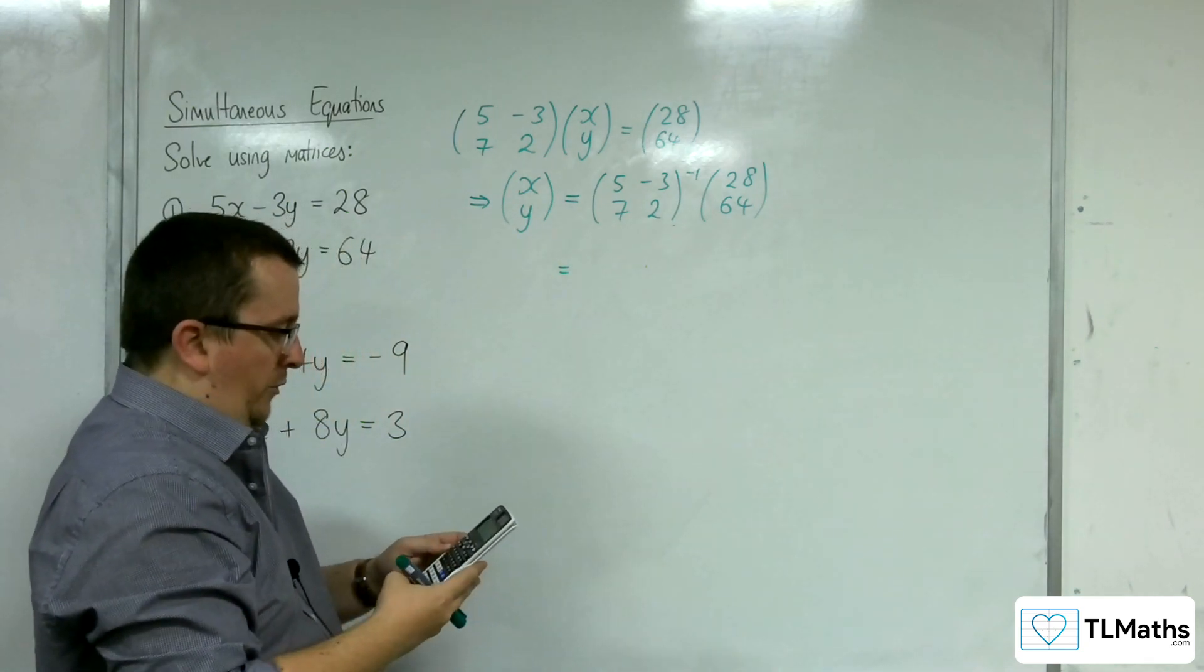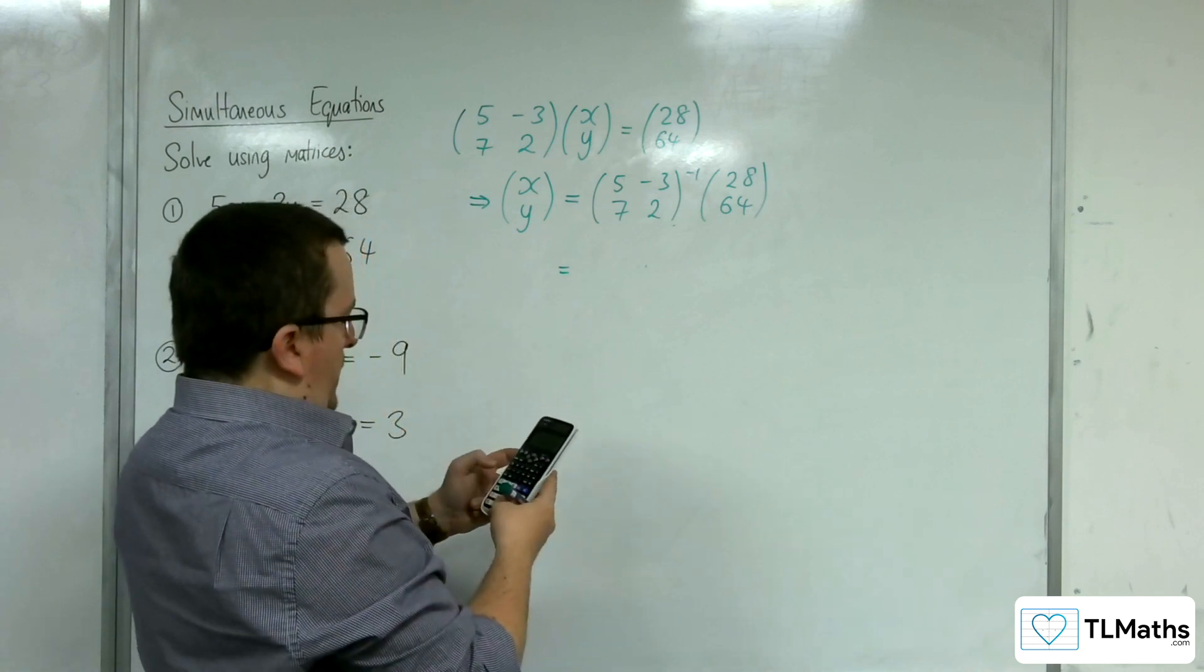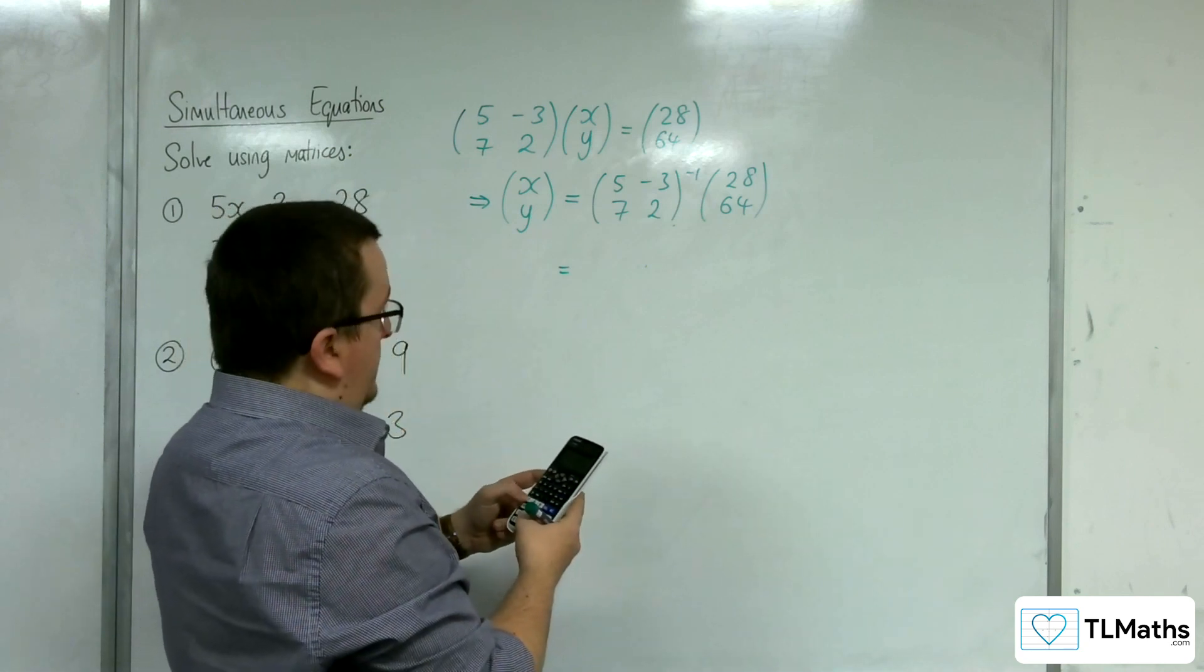We're going into matrix mode, defining matrix A, 2 rows, 2 columns. We've got 5, -3, 7 and 2.